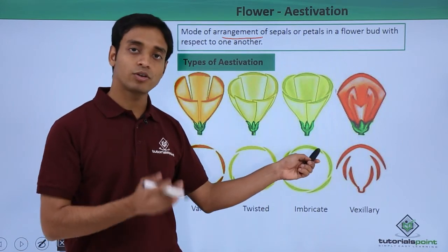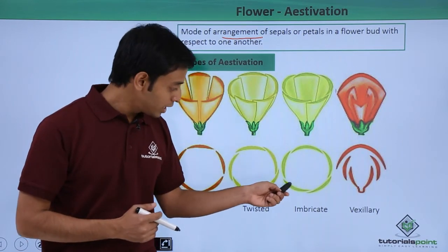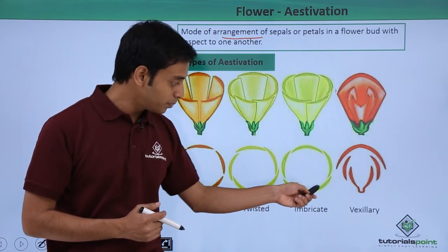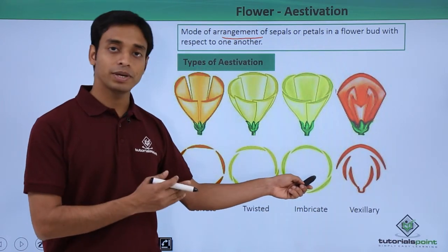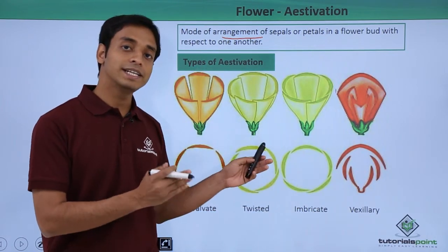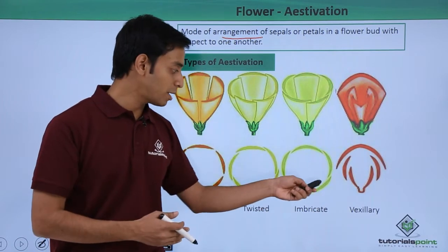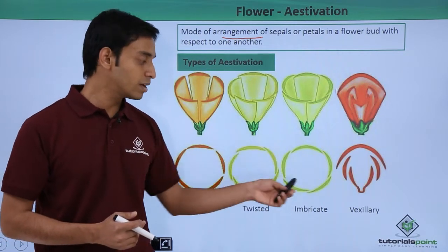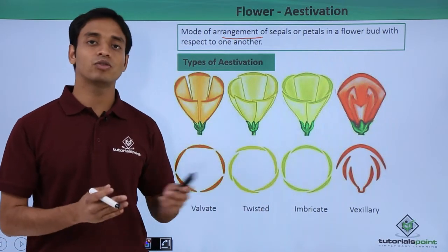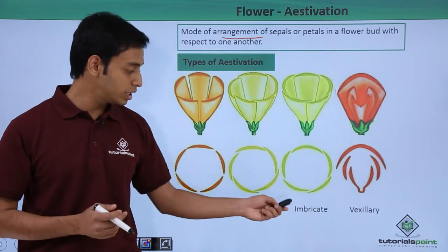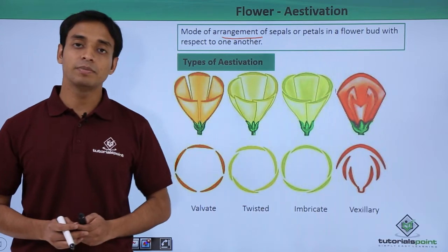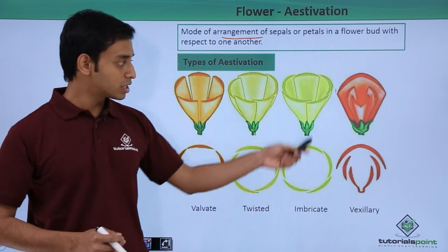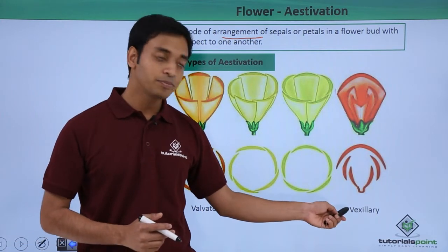In the imbricate type, some petals have only one side overlapped by an adjacent petal while the other end is above the other petals. Another petal may be overlapping but not being overlapped by any adjacent petal. This random kind of overlapping distinguishes the imbricate type.